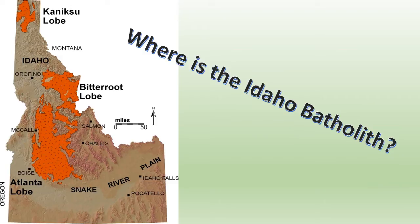Most of the Atlanta lobe is located northeast of Boise and can be seen from the Lucky Peak area. The two lobes are separated by the middle Proterozoic Belt Supergroup metamorphic rocks. The Atlanta lobe is older, forming 100 to 75 million years ago, while the Bitterroot lobe was formed 85 to 65 million years ago.